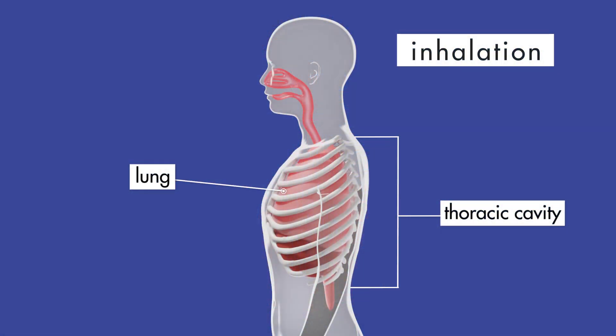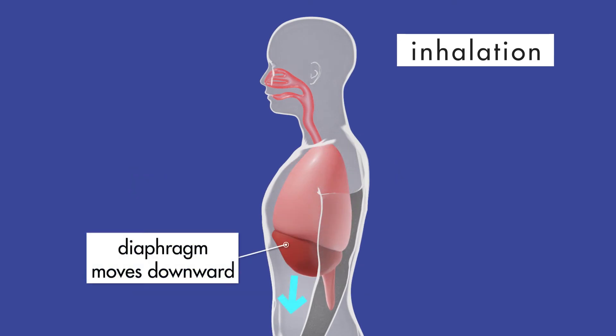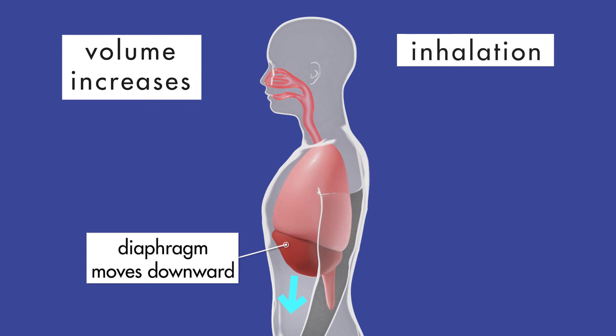The thoracic cavity, where the lungs are located, occupies a certain volume. In the process of inhalation, several sets of muscles work together to expand the volume of the thoracic cavity. A large muscle called the diaphragm separates the thoracic cavity from the abdominal cavity. When the diaphragm moves downward, the thoracic cavity expands and the volume inside the thoracic cavity increases.